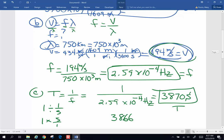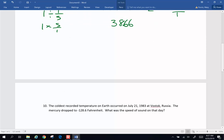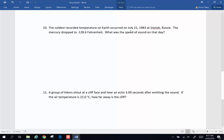Number 10 says this: The coldest recorded temperature on Earth occurred on July 21, 1983 at Vostok, Russia. The mercury dropped to minus 128.6 Fahrenheit. What was the speed of sound on that day? Well, our velocity for speed of sound equation is 331 meters per second times the square root of temperature in degrees Celsius plus 273 to make it Kelvin divided by 273. Before we can do that, we have to convert Fahrenheit to Celsius.